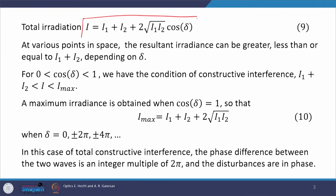Equation number 9 was already derived in the last class, where I₁ and I₂ are irradiances due to source 1 and source 2, which have electric field contributions e₁ and e₂ at the point of observation P. This last term is the interference term, named I₁₂.